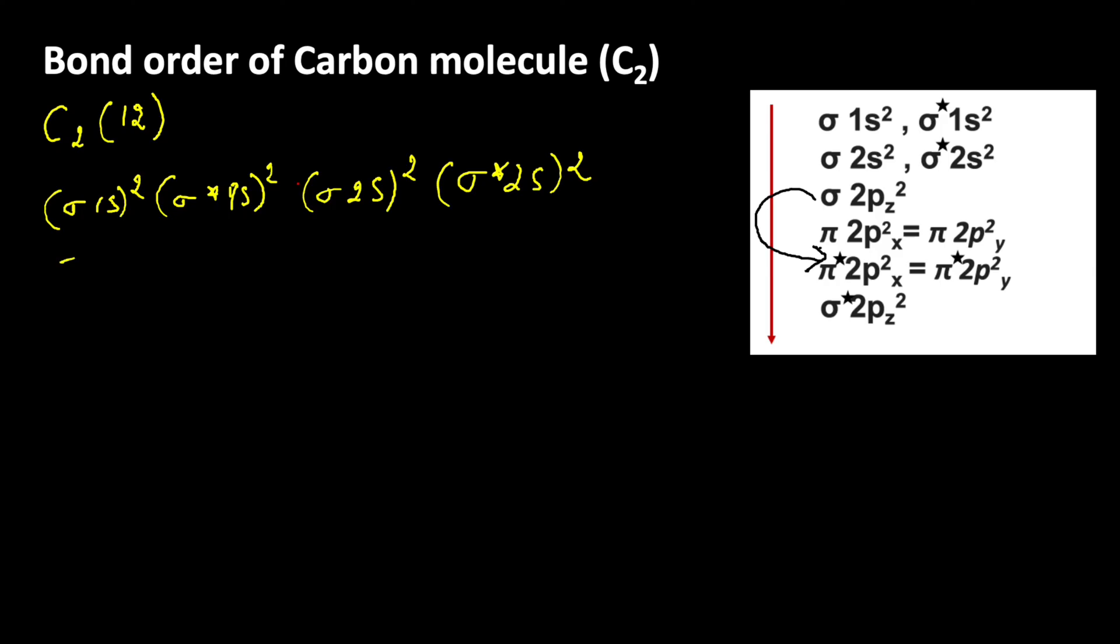The electron enter into pi 2px² = pi 2py² because the energy of pi 2px and pi 2py orbitals are same. Now, let us count the electrons: 2, 4, 6, 8, 10, 12. So, this is the exact electronic configuration of carbon molecule.